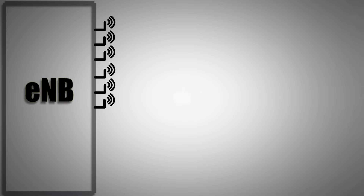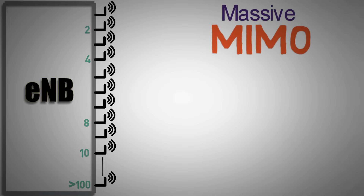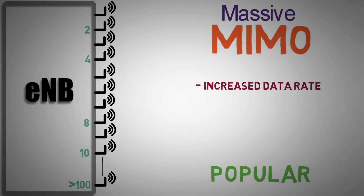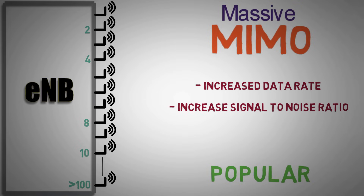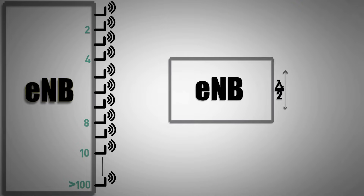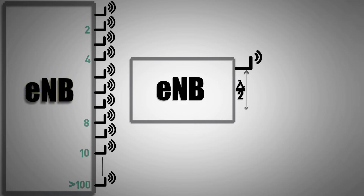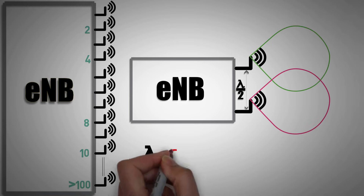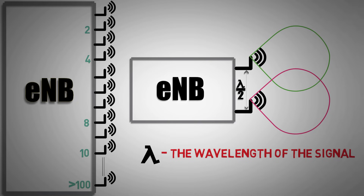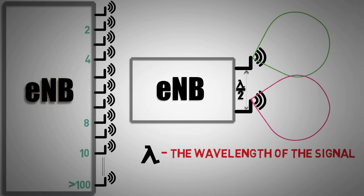Traditional MIMO systems have two, four, or eight antennas. When the number of antennas used in a communication terminal is more than tens or hundreds, it is called a massive MIMO system. The concept of massive MIMO, or large MIMO systems, is becoming popular as it is able to offer increased data rate, increased basic link signal-to-noise ratio, and channel hardening. A key issue faced in massive MIMO is antenna placement. As a rule of thumb, spacing of lambda/2 — where lambda is the wavelength of the signal — is considered necessary to provide almost no correlation between the antennas.